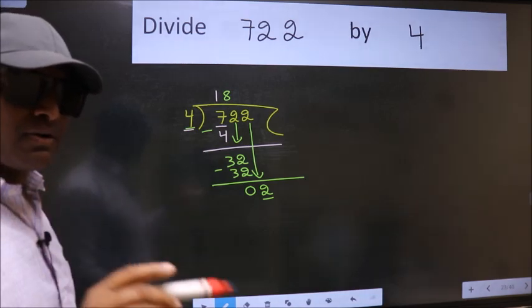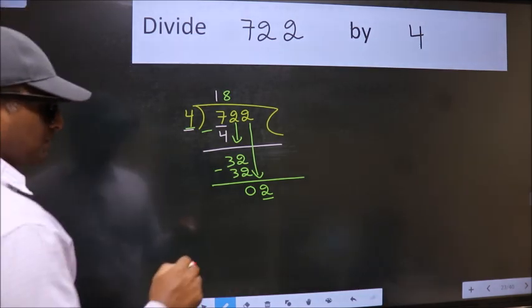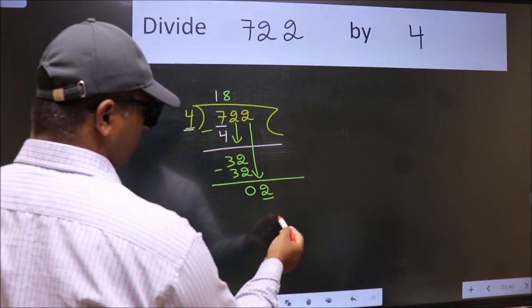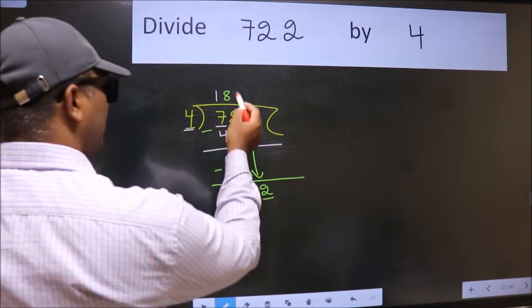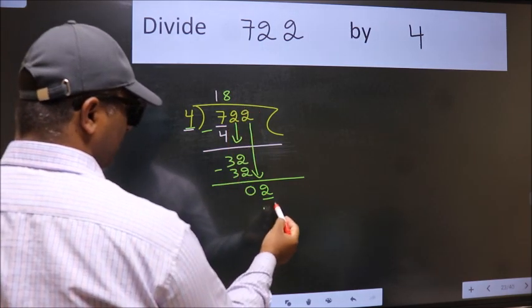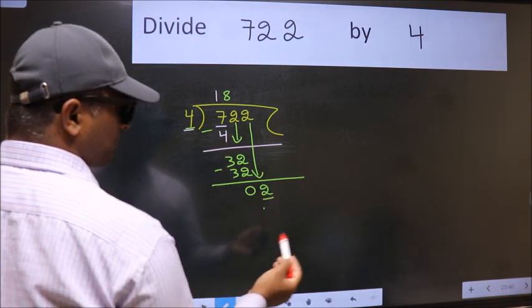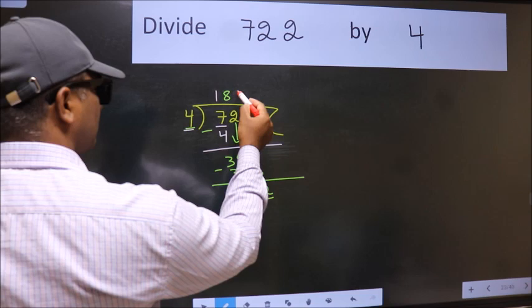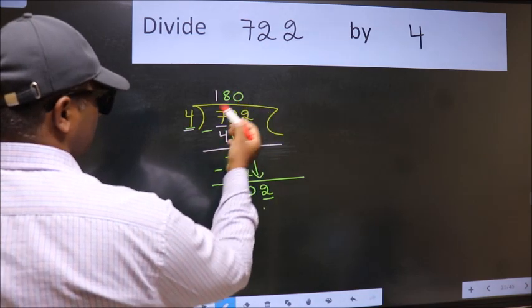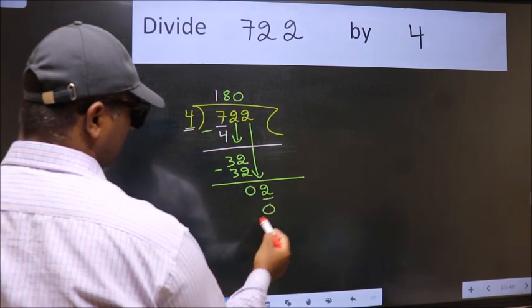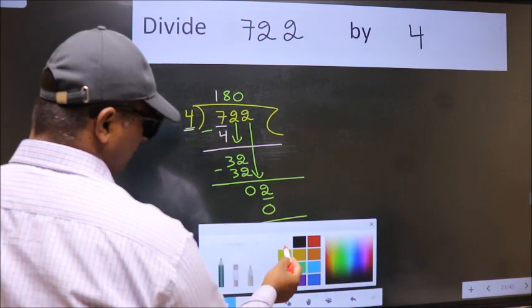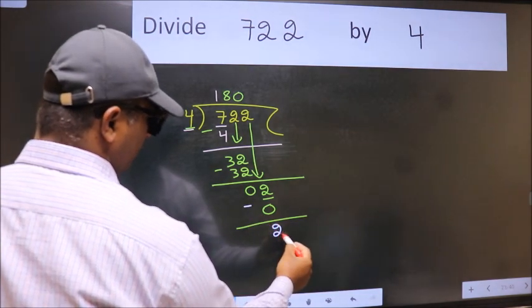Instead of that, what we should think of doing is which number should we take here? If I take 1, we will get 4. But 4 is larger than 2. So what we do is we take 0 here. So 4 into 0, 0. Now we subtract. We get 2.